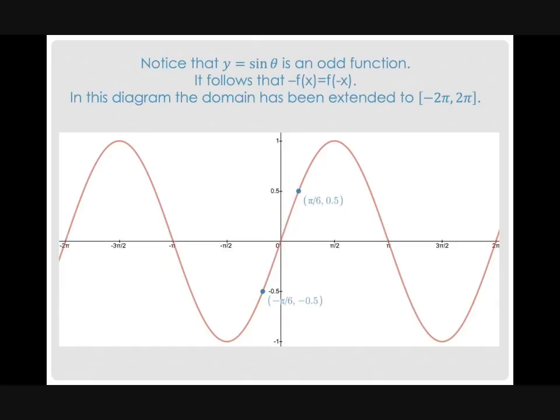Also, notice that sine is an odd function. Now, what are the markings of a sine function? Well, it must follow that negative f(x) must be equal to f(−x). And I gave you two points here for reference. If you'll notice, these two points are the same numerical. Their absolute value is the same. However, the fact that one is positive while the other one is negative speaks to them being an odd function. Notice the point symmetry that happens at the origin.